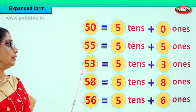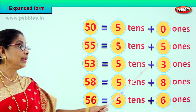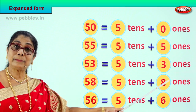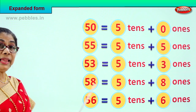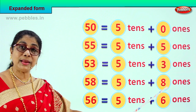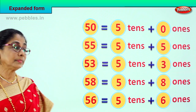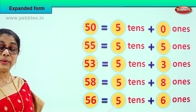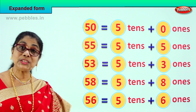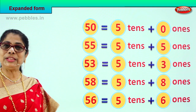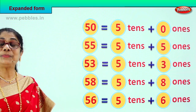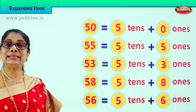53 is equal to 5 tens plus 3 ones. 58 is equal to 5 tens plus 8 ones. 56 is equal to 5 tens plus 6 ones. Did you enjoy expanding the numbers? Good!